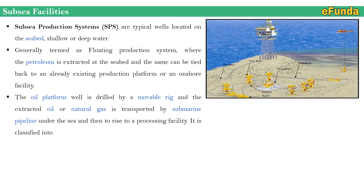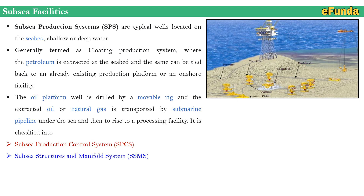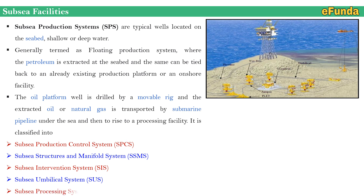The oil platform well is drilled by a movable rig and extracted oil or natural gas is transported by submarine pipeline under the sea, then rises to a processing facility. It is also classified into the following: subsea production control system (SPCS), subsea structure and manifold system (SSMS), subsea intervention system (SIS), subsea umbilical system (SUS), and subsea processing system (SPS).